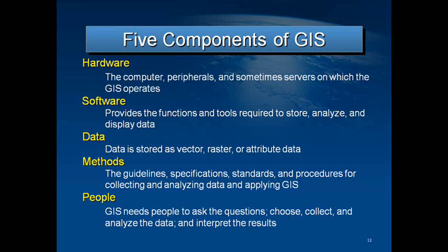Hardware refers to the computer, peripherals, and sometimes servers on which the GIS operates. Software provides the functions and tools required to store, analyze, and display data. Data is stored as vector, raster, or attribute data, and we'll get into more of that in a little bit.